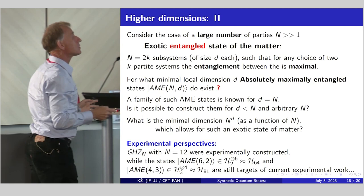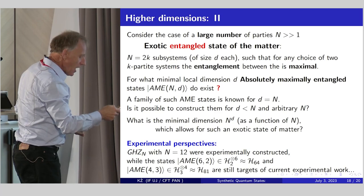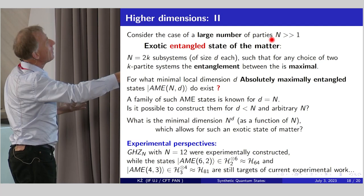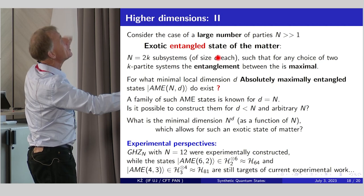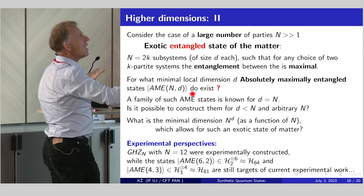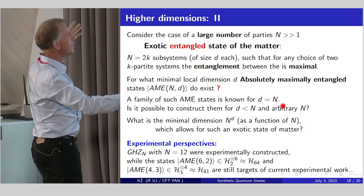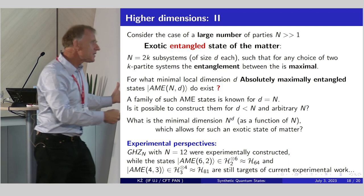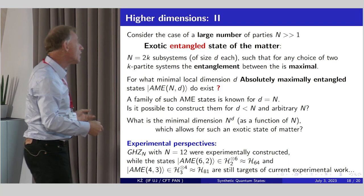I'm almost done, but now I will mention what is related to matter and exotic synthetic matter. I will say, from my perspective, a nice and exotic, let's say, entangled state of matter would be such a system with a huge number of parties n, such that if you choose any two subsystems, each of size d, then the entanglement between all of them is maximal. And of course, the natural question exists. What is the minimal local dimension that such a state exists if n is arbitrary? Then it is known that such a family exists for d equals n. Well, now the question is whether you can find such a solution for d smaller than n. And of course, from the practical point of view, it's interesting to check whether such states can be realized in an experiment.